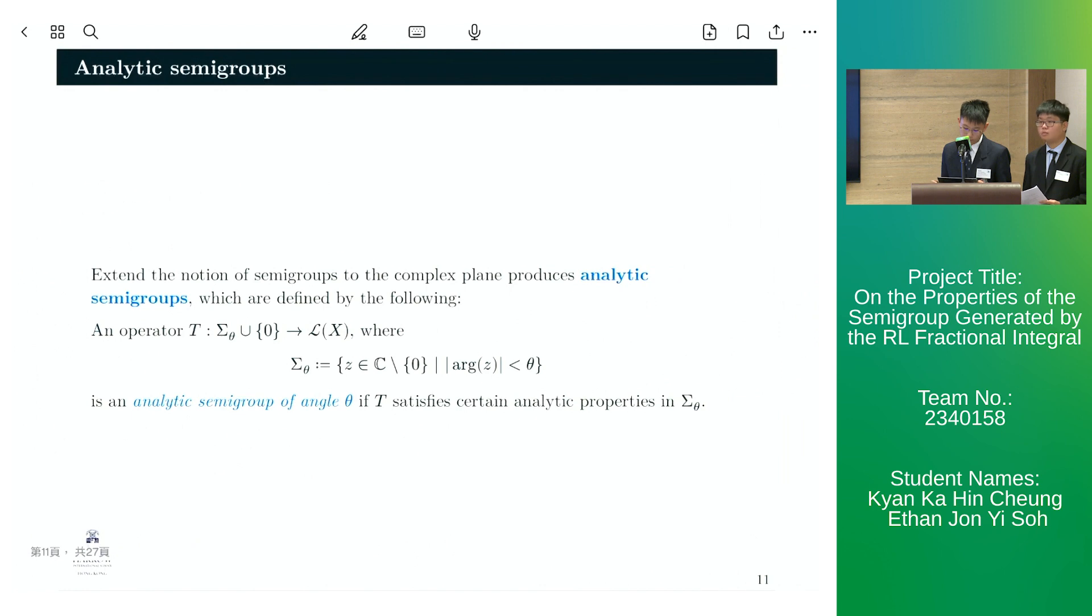Now, by extending the notion of semigroups to the complex plane, we produce analytic semigroups, which are defined to be operators mapping from a certain set defined below to the set of bounded operators. An analytic semigroup is of angle theta if it satisfies certain analytic properties in this set.